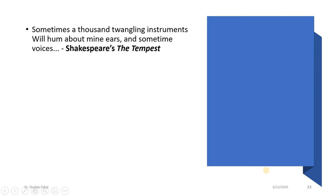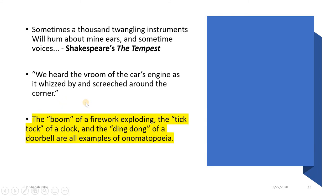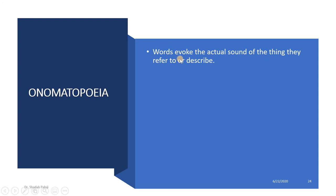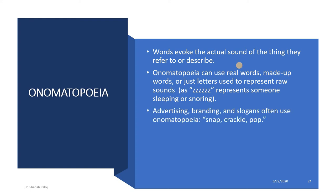Then from Shakespeare: 'Sometimes a thousand twangling instruments will hum about mine ears and sometime voices' — it's from 'The Tempest.' 'We heard the vroom of the car's engine as it whizzed by and screeched around the corner.' Can you see the words? 'The boom of a firework exploding, the tick-tock of a clock, and the ding-dong of a doorbell' — all examples of onomatopoeia. These words denote some sound. So what is onomatopoeia? The word that evokes the actual sound of the thing being described. Advertising, branding, and slogans often use onomatopoeia — snap, crackle, pop. These words give us the feel of that sound.